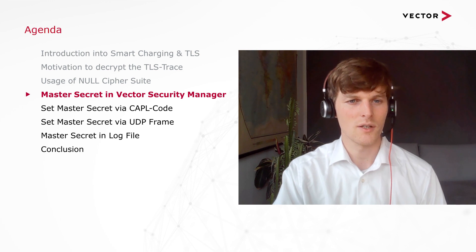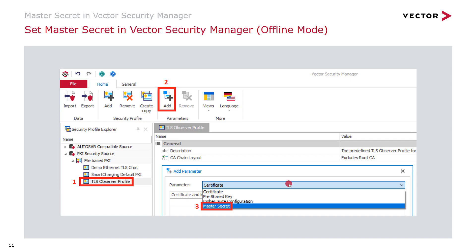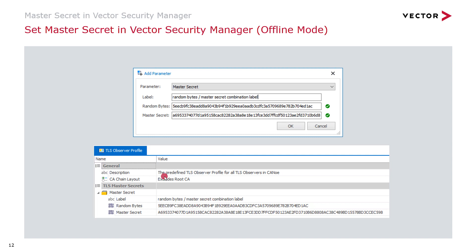The next solution is setting the master secret in the Vector Security Manager. You open the Vector Security Manager, click on the TLS observer profile, and click add parameters. You choose master secret and a new window will appear where you can type in your master secret and your client random. The client random is used to identify the TLS session in your trace — you can have multiple TLS sessions — and CANoe will match the correct session according to the client random.